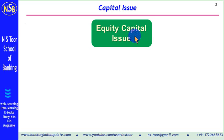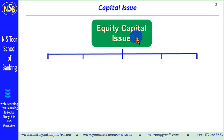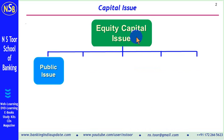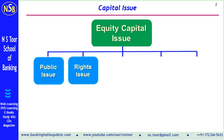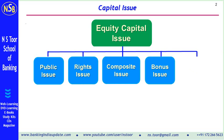This equity capital issue can be covered in five different types. Number one, it can be a public issue. Number two, it can be a rights issue. Number three, it can be a composite issue. Number four, it can be a bonus issue. Number five, it can be private placement.